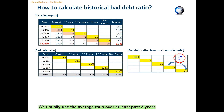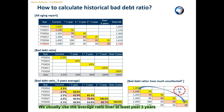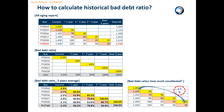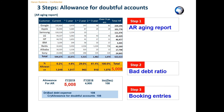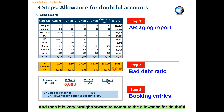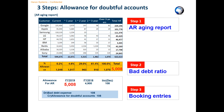We usually use the average ratio over at least the past 3 years to avoid being affected by conditions specific to a certain year. Now we all understand the logic on how to compute the bad debt ratio for each aging bucket in the AR aging schedule. It is then very straightforward to compute the allowance for doubtful accounts by applying the bad debt ratio to the aging schedule. Thank you very much for watching this video.